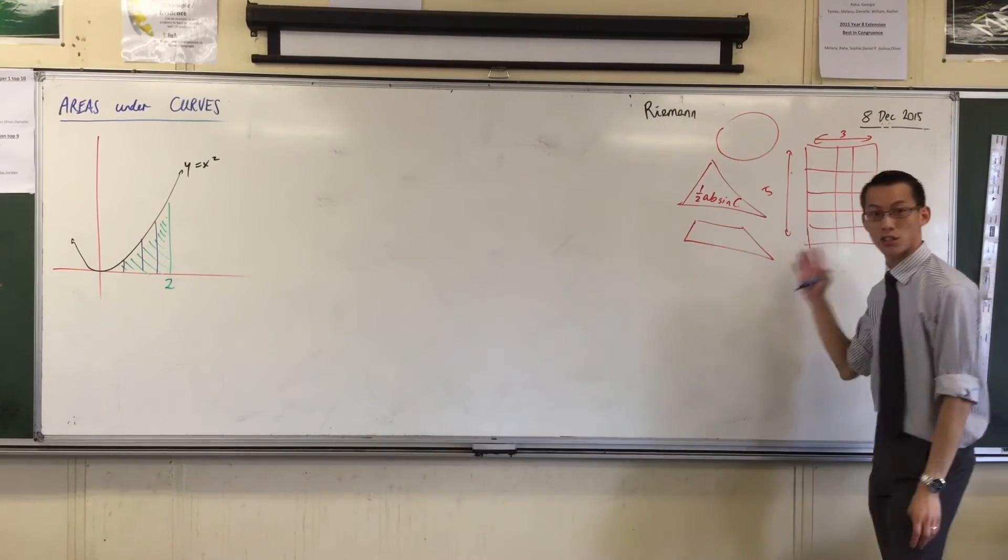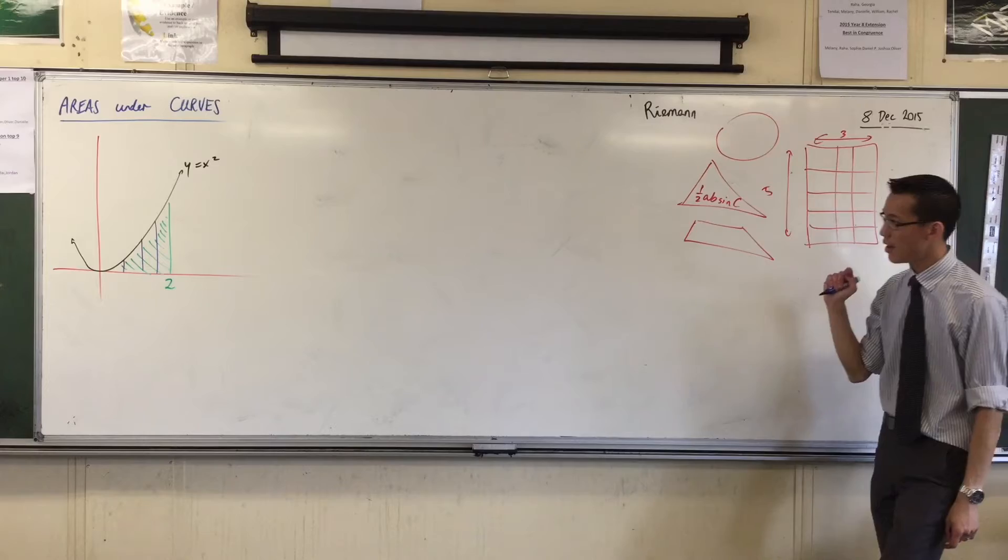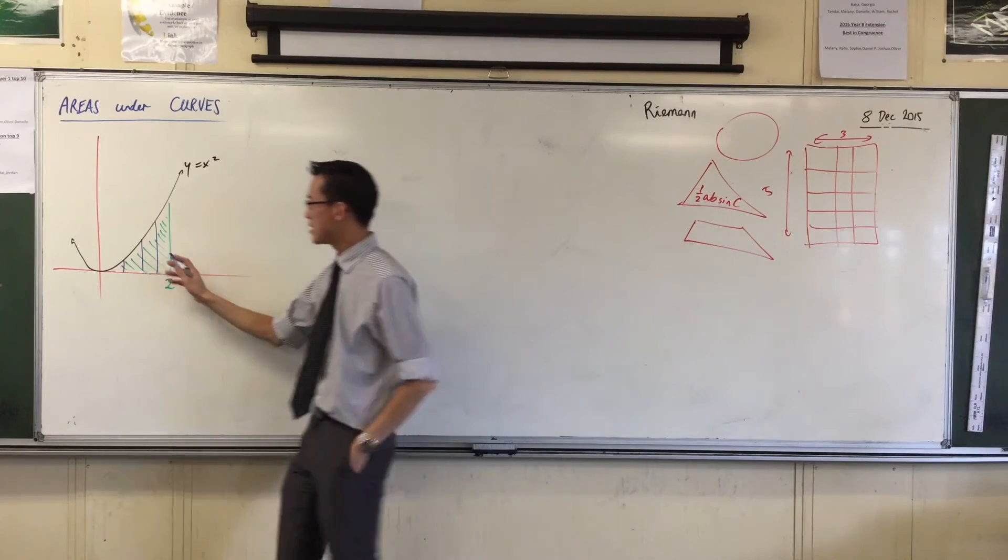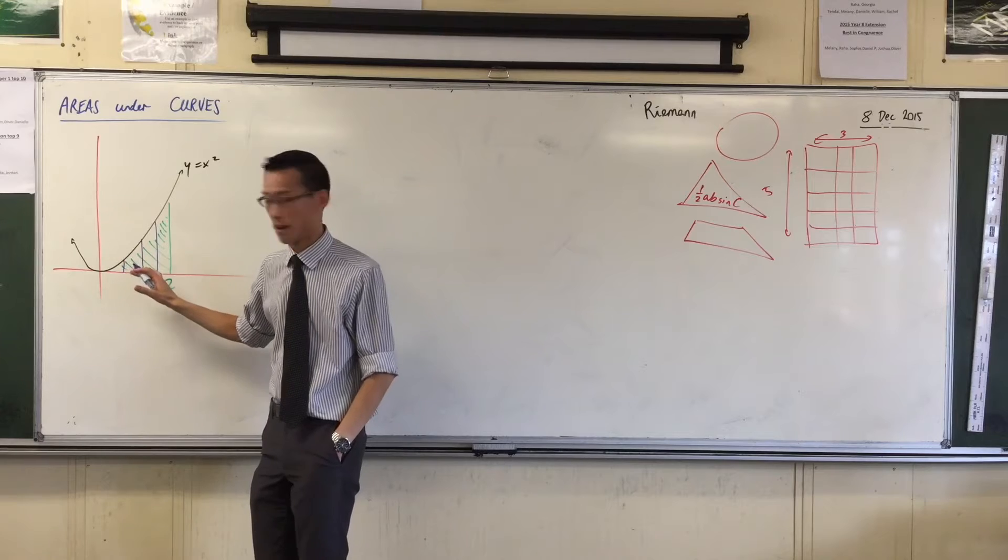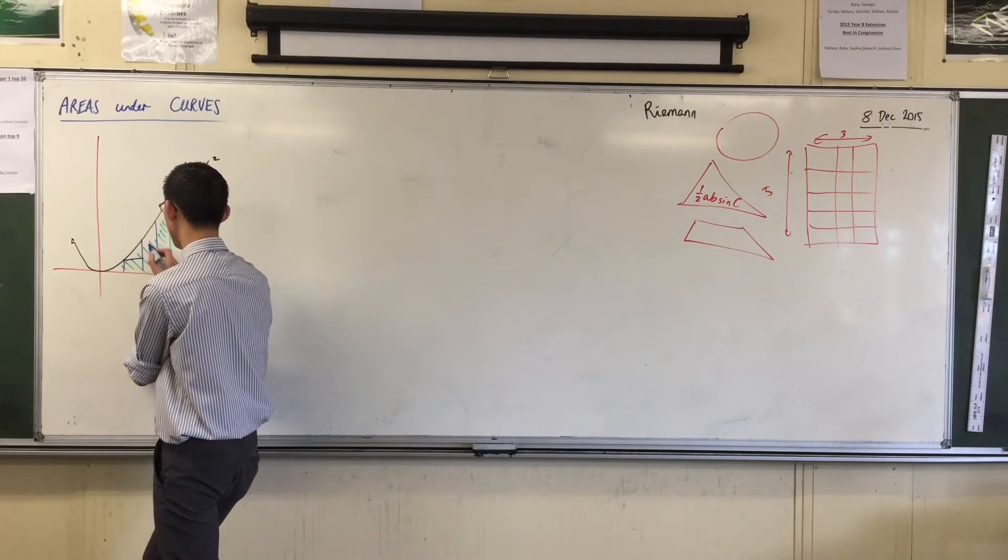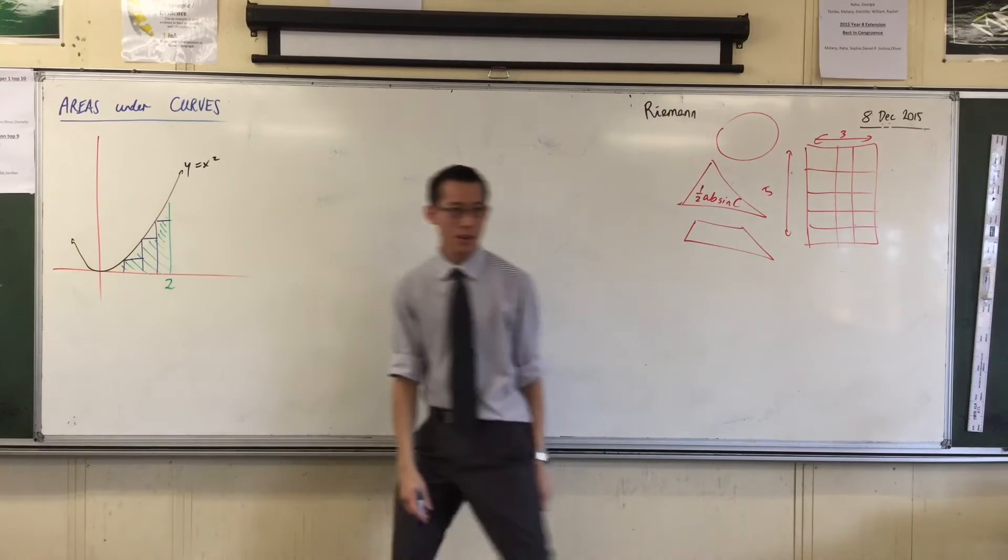But I can approximate them with shapes that I know how to work out. So the first way he did this, he said, I'm going to draw some rectangles in here. I'm going to draw some rectangles. For instance, I can draw a rectangle here, here, and here.